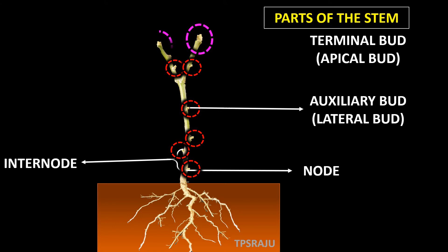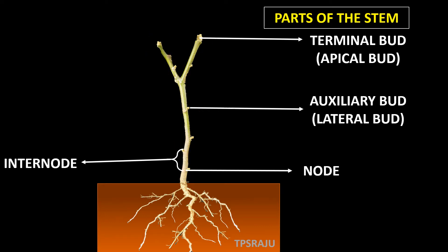The buds at the tip of the stem are called apical buds or terminal buds. These are apical buds. Likewise, stem has 4 parts: nodes, internodes, axillary buds and terminal buds.